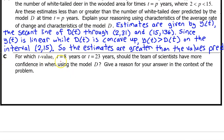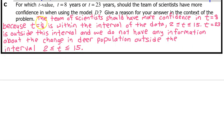Part C: For which t value — t equals 8 years or t equals 23 years — should the team of scientists have more confidence when using model D? The team should have more confidence in t equals 8, because t equals 8 is within the interval of the data, which is 2 to 15. t equals 23 is outside this interval, and we do not have any information about the change in deer population outside the interval from 2 to 15.